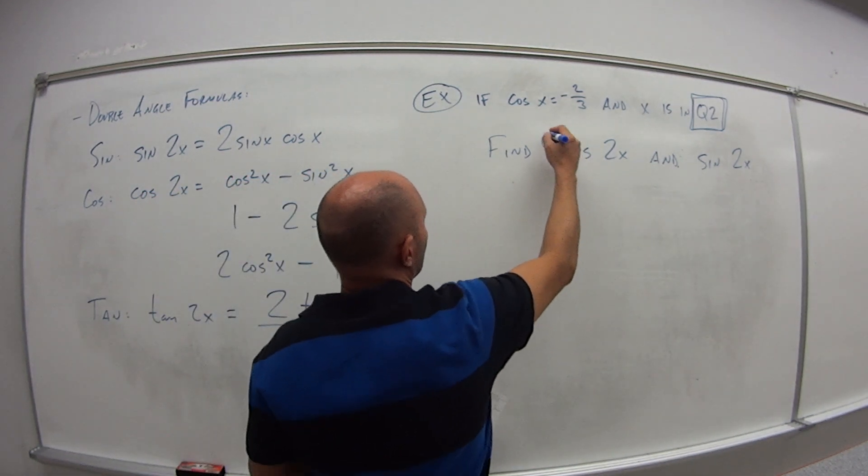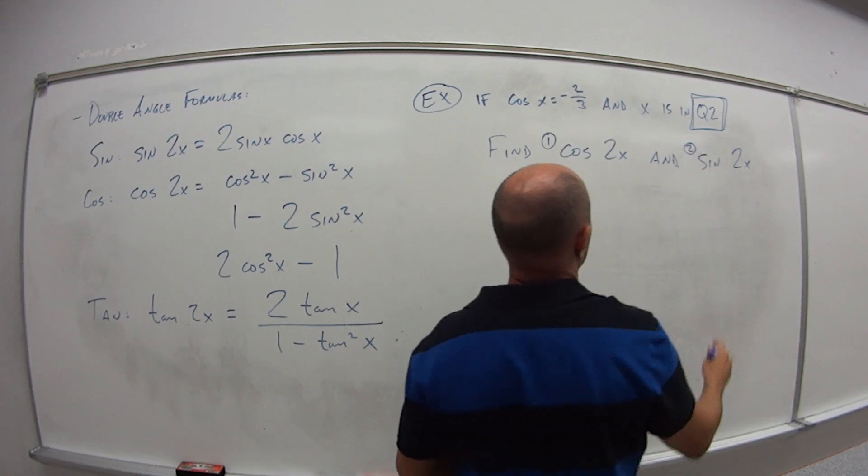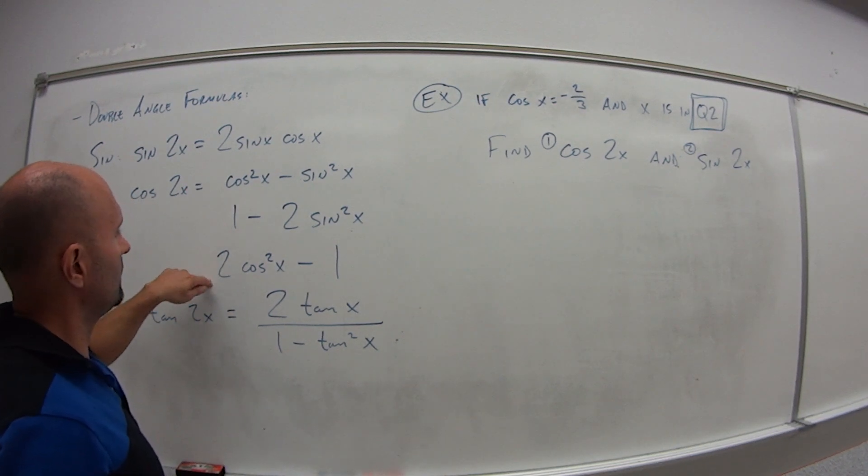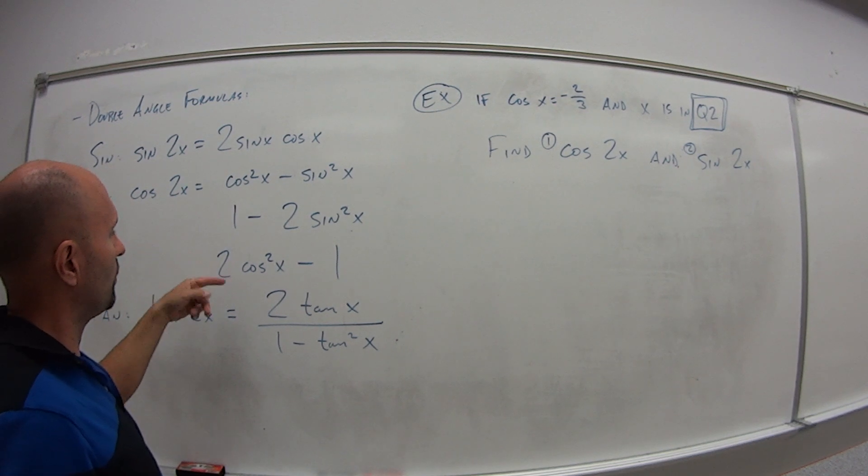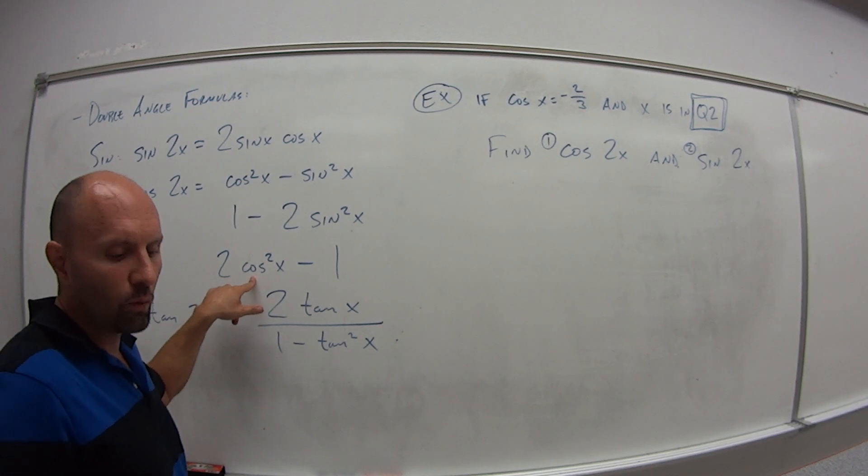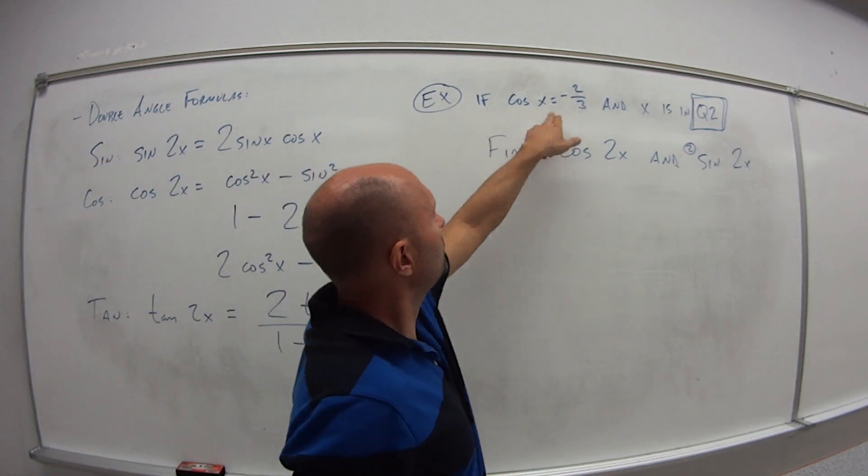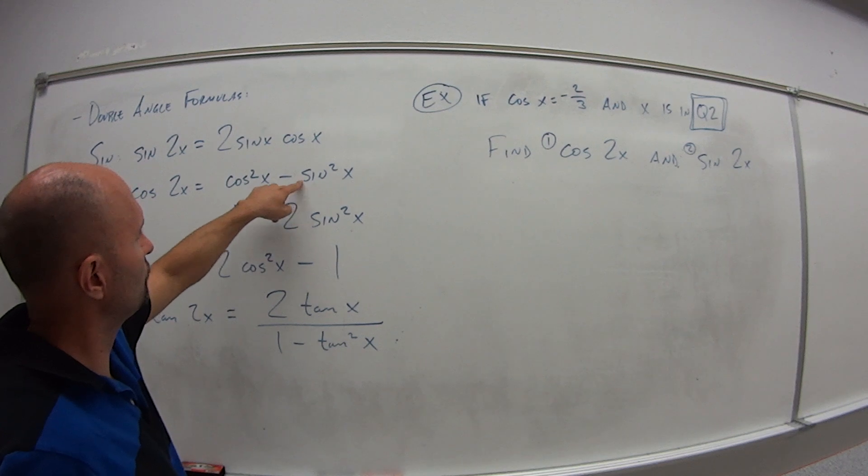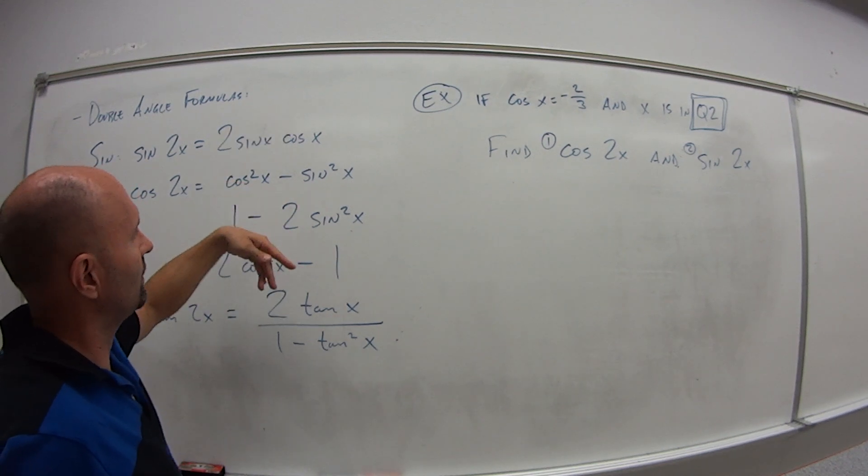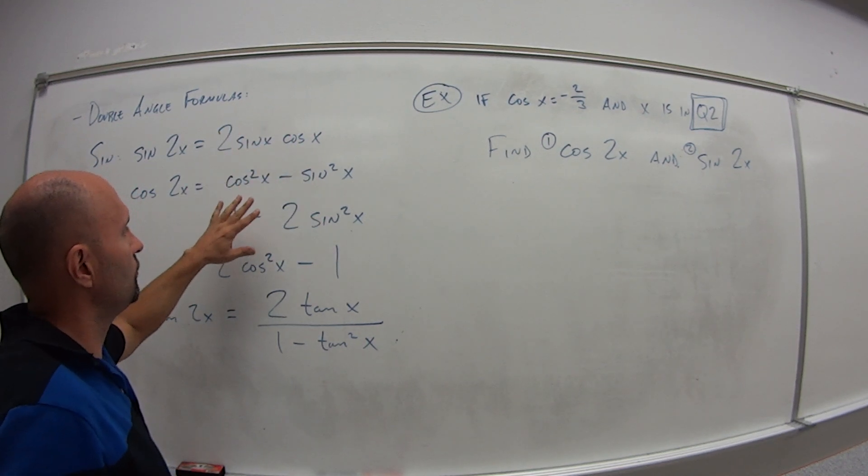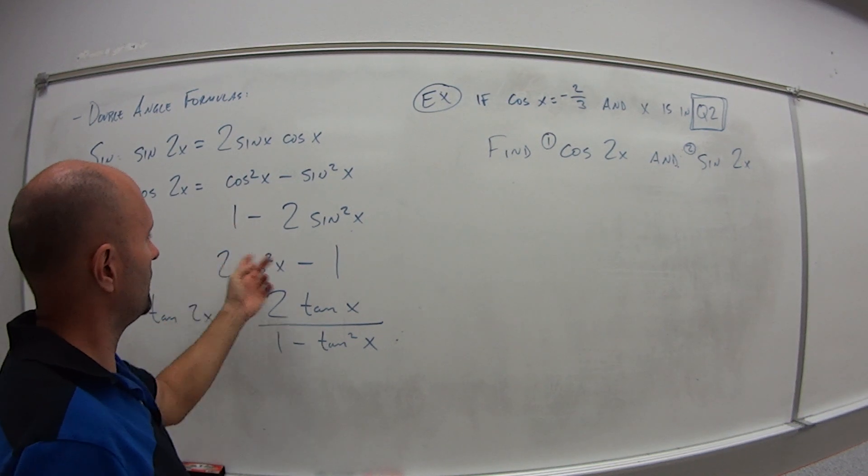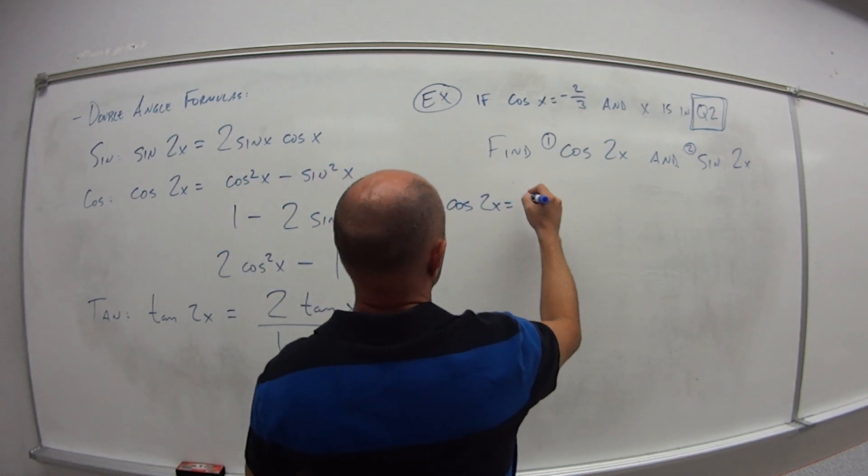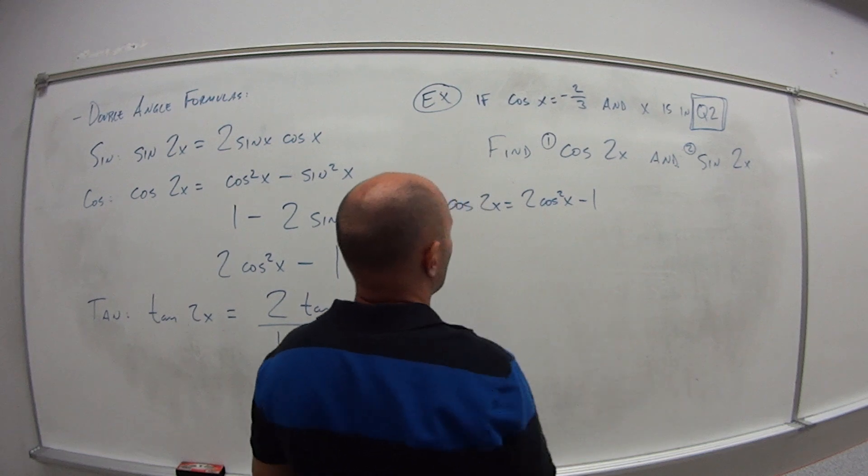So it's actually two problems here. First thing we got to figure out, second thing we need to figure out. So cosine of 2x we can choose any one of these formulas, right? Well which one do we want to choose? Well obviously number three. Why? Because we're given what the value of cosine of x is. So we can choose the formula that just has cosine. If I choose one of these I need to go calculate sine then plug that value in. This way all I've got to do is plug it in and figure it out.